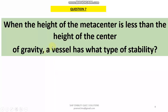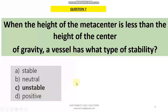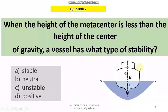Question 7: When the height of the metacentre is less than the height of the centre of gravity, the vessel will have what we call unstable equilibrium. This is a very dangerous situation because the heeling moment and righting moment will be in the same direction. Suppose a vessel heels to the starboard side — the righting moment will also act towards the starboard side, so even with a very small force the vessel may capsize. This is a highly dangerous situation for any ship.